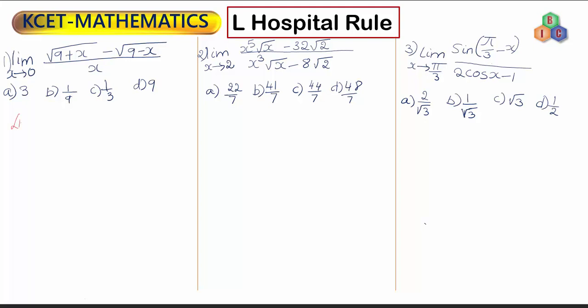Let me differentiate the numerator. This is limit extending to 0. The differential coefficient of root of (9 plus x) is 1 by 2 root (9 plus x), into the differential coefficient of (9 plus x). The differential coefficient of 9 is 0 and of x is 1.